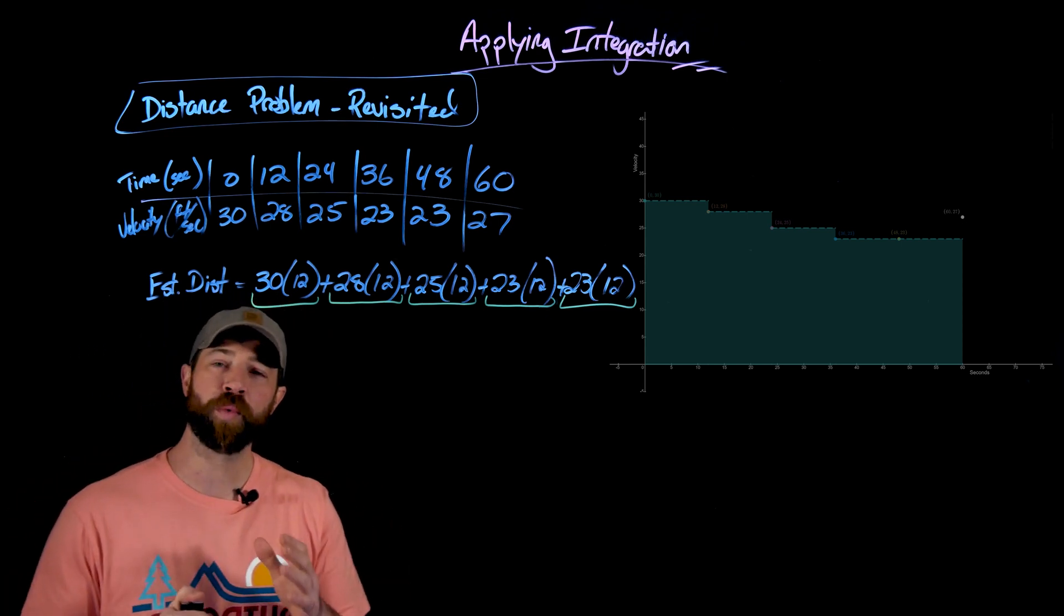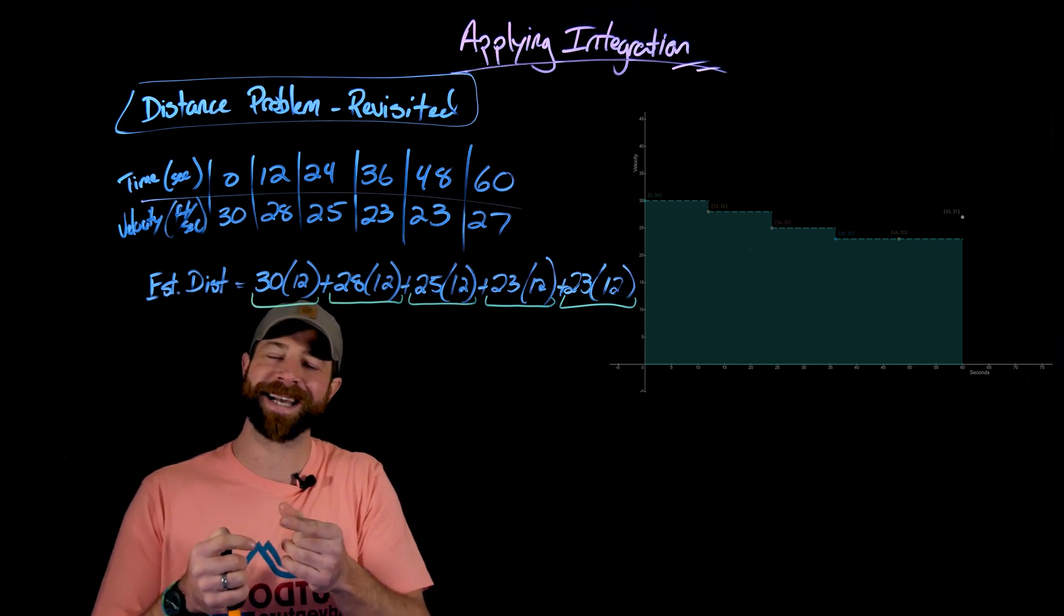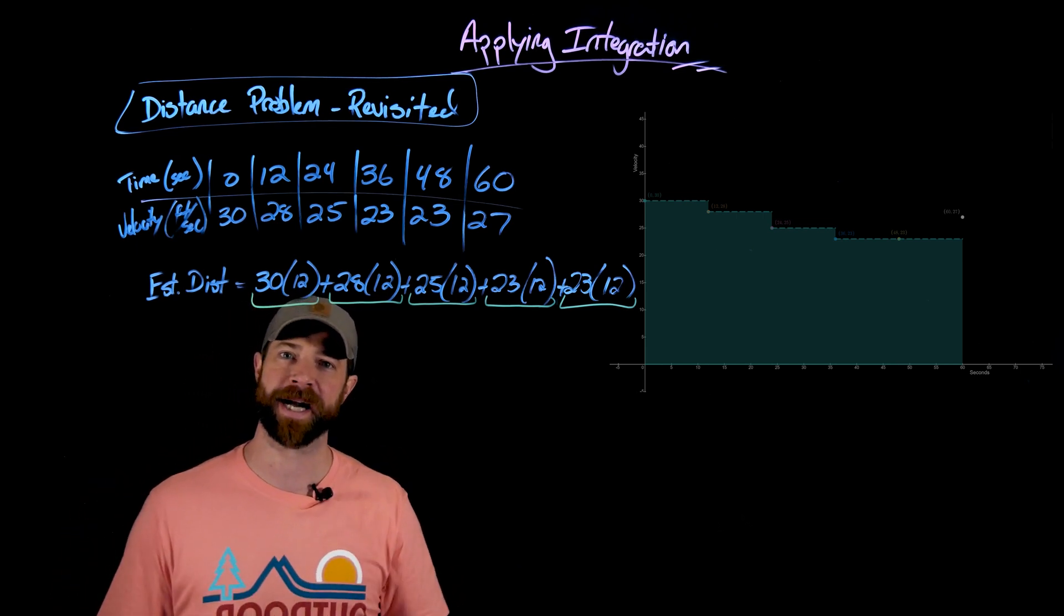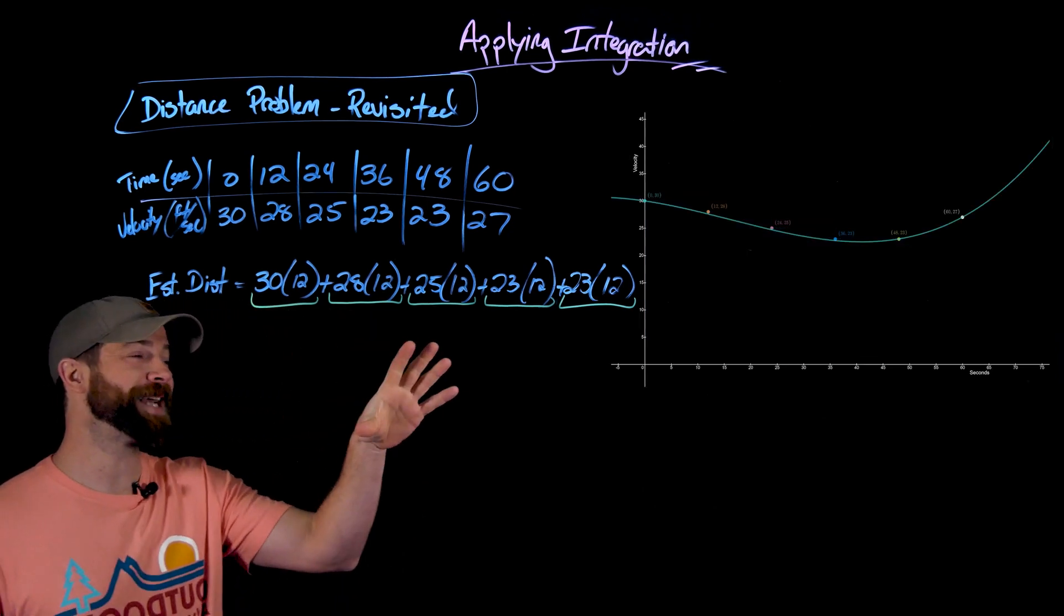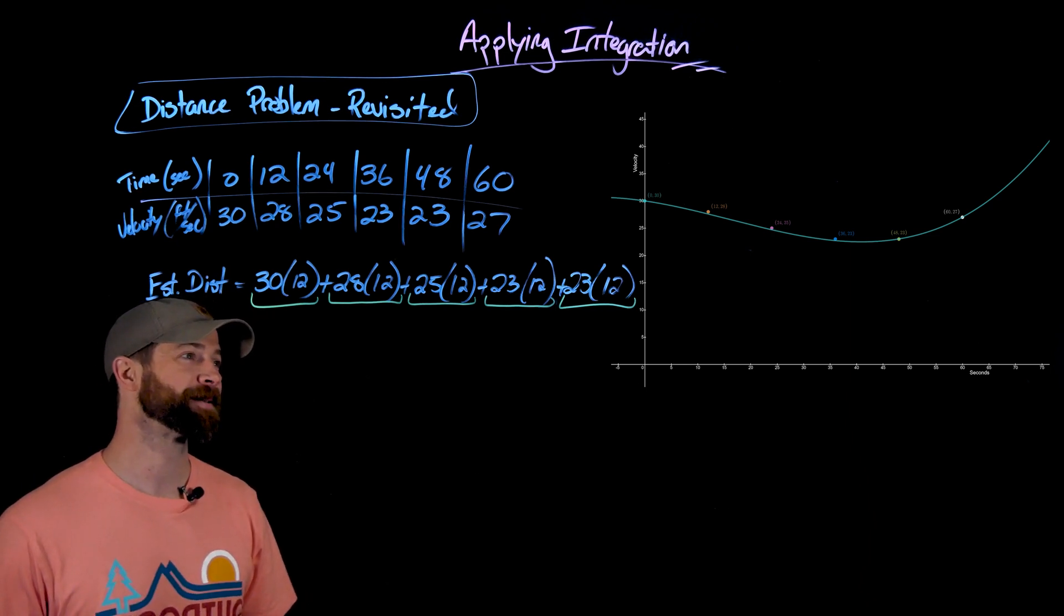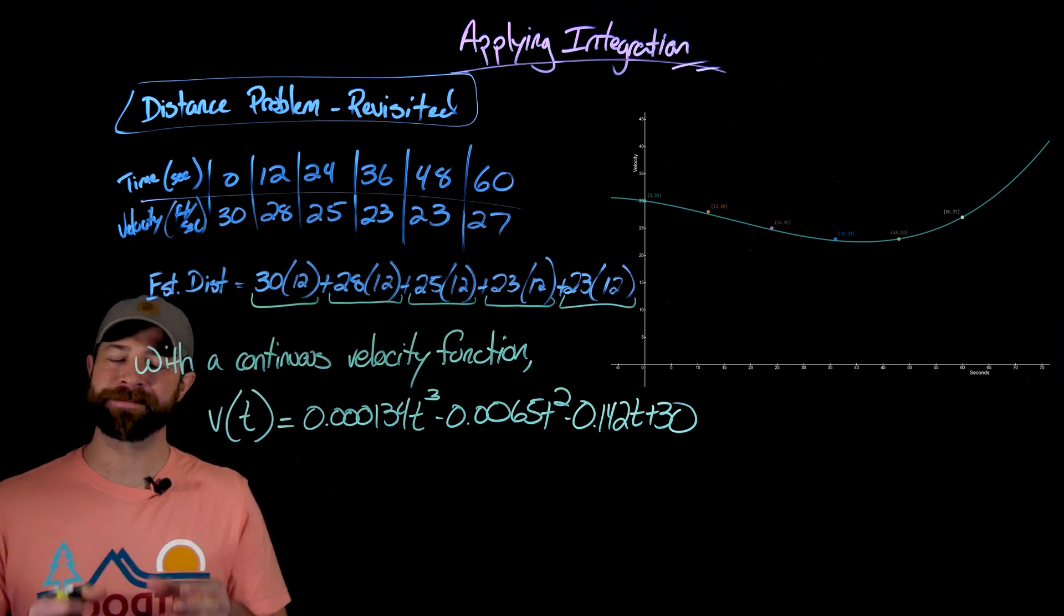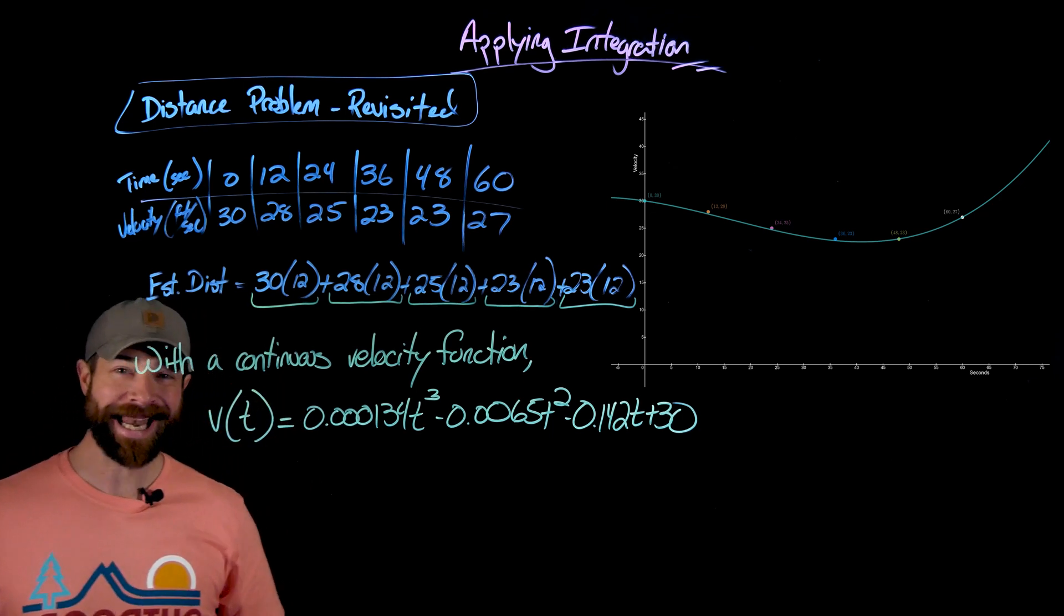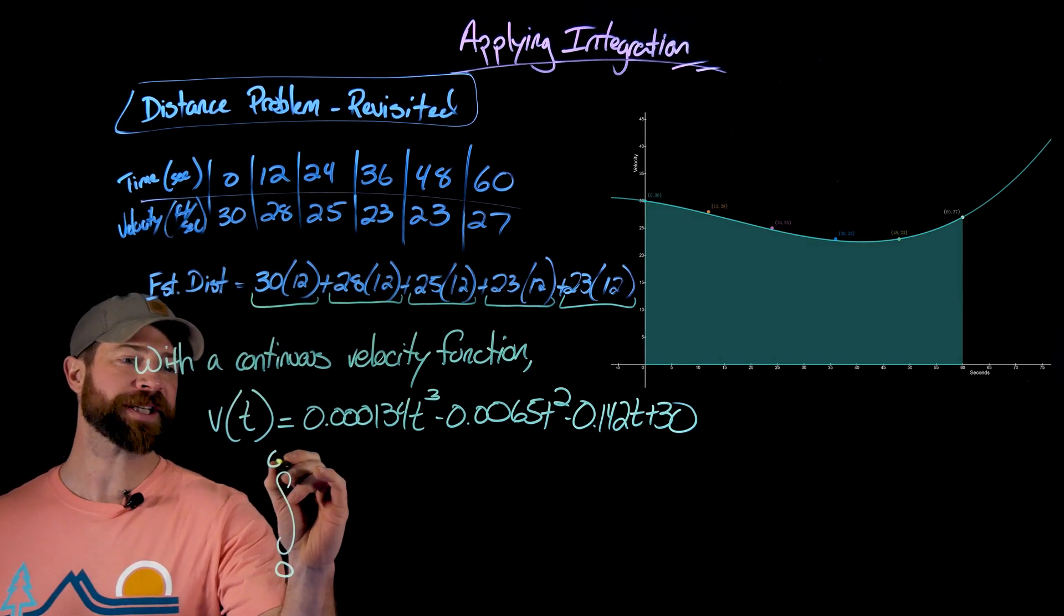The question then becomes, what if instead of these discrete readings, what if we had an equation that represented the velocity of this motorcycle at any given time? So using polynomial regression, what I did was created a function that pretty well represents these speeds. Then what should be clear is, instead of having these discrete estimates for these intervals, if we take this velocity function and integrate this function from 0 to 60...